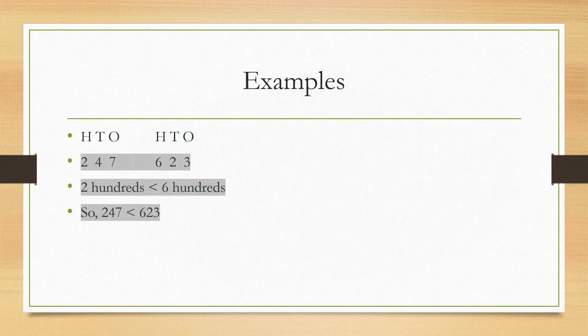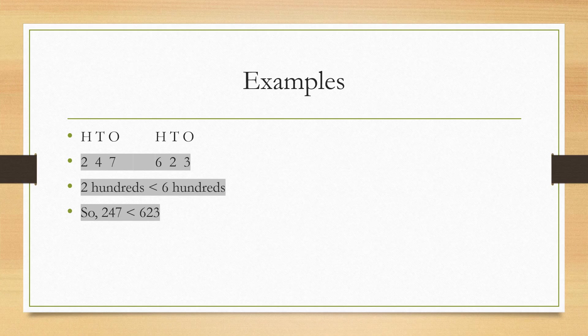Now let us understand this with some examples. Look at the numbers — 247 and 623. We begin by comparing the digits in the hundreds place. Here, 6 is greater than 2. So the number 623 is greater than 247. The open side of the sign always points towards the greater number and the closed side always points towards the smaller number.